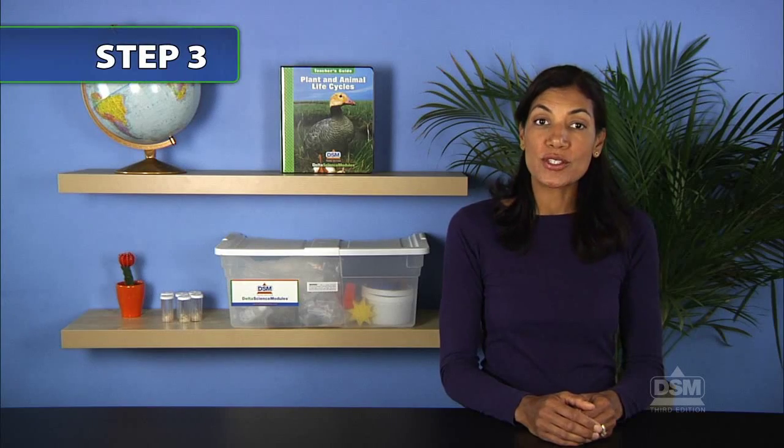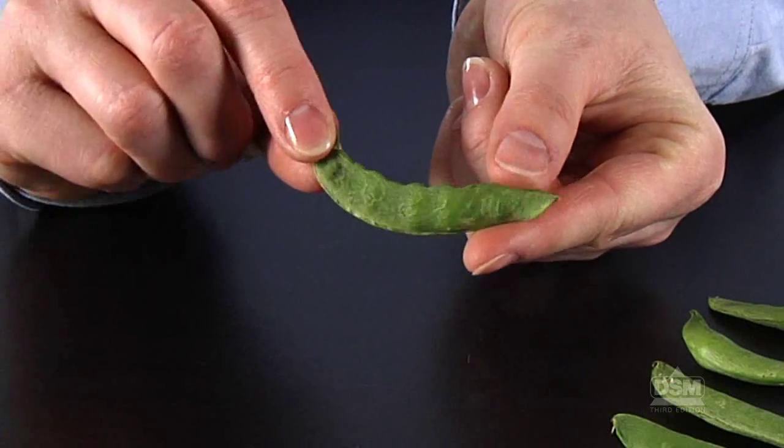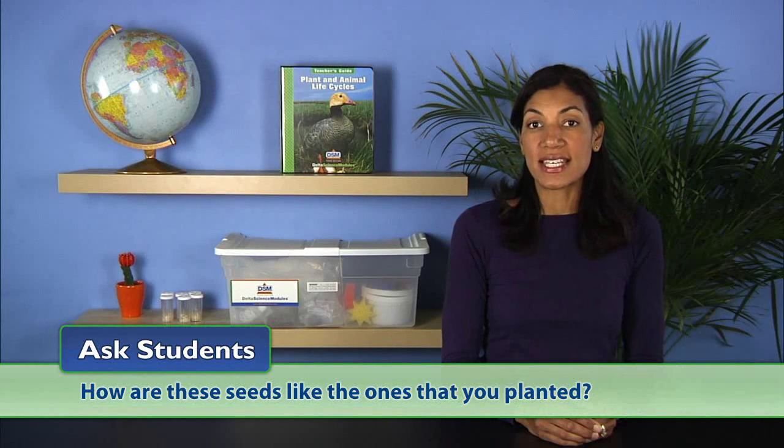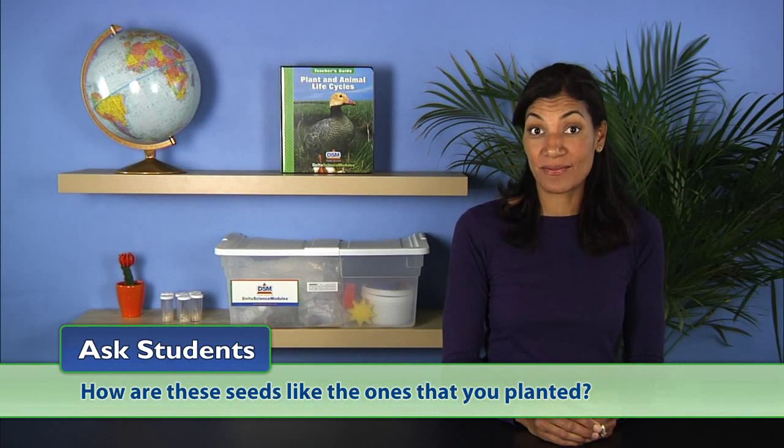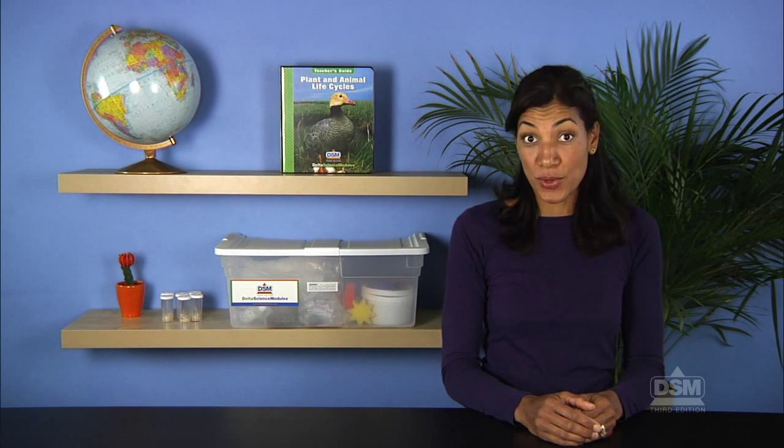Then instruct students to remove the dried pods from their pea plants. Ask students, how are these seeds like the ones that you planted? Students should have observed that they were wrinkled, dry, and round.